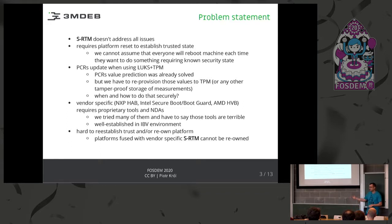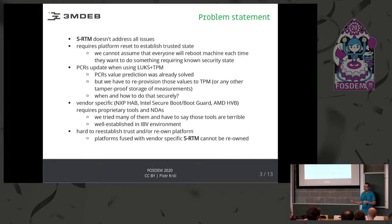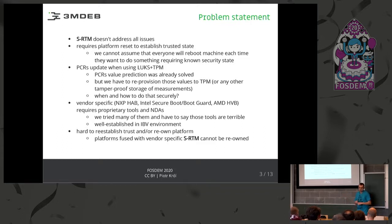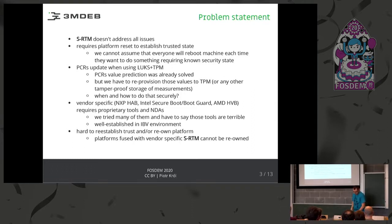Another issue: say some device comes to us from an offshore company, and we just want to make sure that what we're flashing — even if we're flashing a fully new BIOS — is really what we want. With static root of trust, we cannot do that because we don't trust what came from the offshore vendor. So we need some mechanism that can re-establish trust in the platform, and this is what dynamic root of trust should solve.